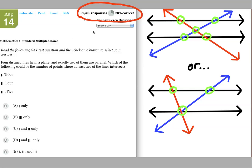Alright, so let's take a look at this math question here. Four distinct lines lie in a plane, and exactly two of them are parallel. Which of the following could be the number of points where at least two of the lines intersect?